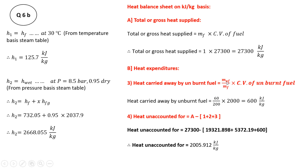Heat carried away by unburned fuel: since our heat balance sheet is on a per kg of fuel basis, we divide mass of unburned fuel by mass of fuel and multiply by its calorific value: (60 / 200) × 2000 = 600 kJ/kg. Finally, the unaccounted heat equals total heat supplied minus the three calculated parts: 27300 − 19321.898 − 5372.19 − 600 = 2005.912 kJ/kg. Now we formulate the heat balance sheet.